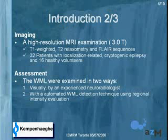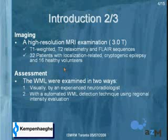We did a high-resolution MRI examination at 3 Tesla. We acquired T1-weighted and T2 relaxometry FLAIR sequences. We included 32 patients with localization-related cryptogenic epilepsy, which means these patients did not show any abnormalities on the clinical MRIs, and we included 16 healthy volunteers. The assessment of white matter lesions was done in two ways: visually by an experienced neuroradiologist, and with a segmentation algorithm.